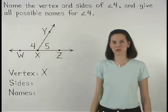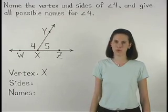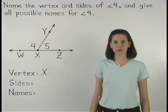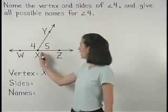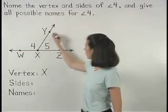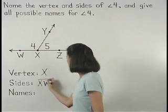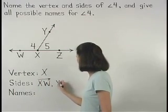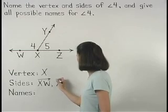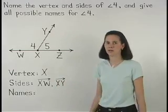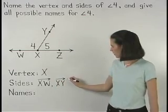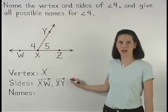The sides of the angle are the two rays that form the angle, which we've just shown are rays XW and XY. Remember to use the ray symbol when representing the sides of an angle.